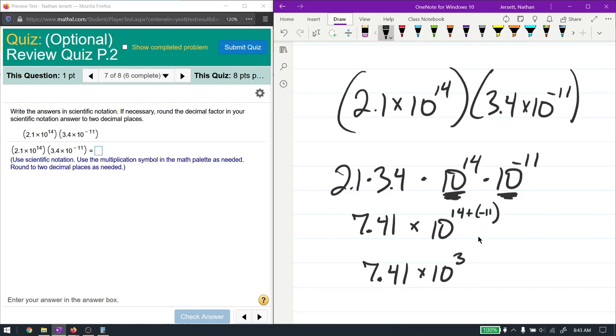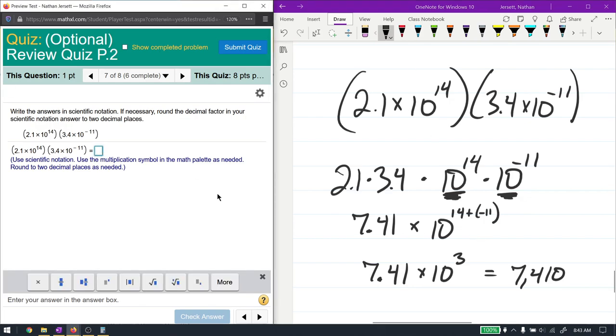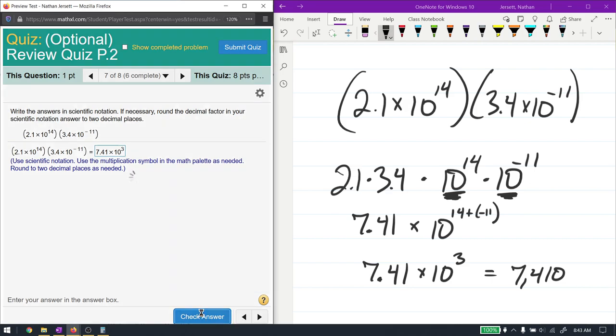This is our answer in scientific notation. Just so you know what it is. It's the same thing as 7,410. Again, move the decimal point three places back. This is again, a large number. So it's going to be 7,410. But we write 7.14. It says round to two decimal places as needed. So I just need to make sure my answer is correct. And it should be 10 to the power of three.